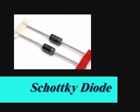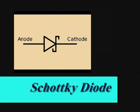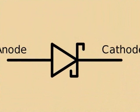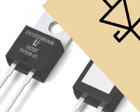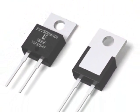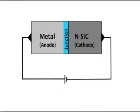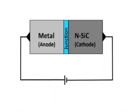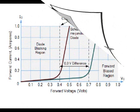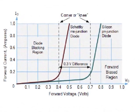Schottky Diode. This model is made by connecting a semiconductor and a conductor. Usually the metal used is molybdenum, platinum, chromium, or tungsten, combined with an N-type semiconductor.